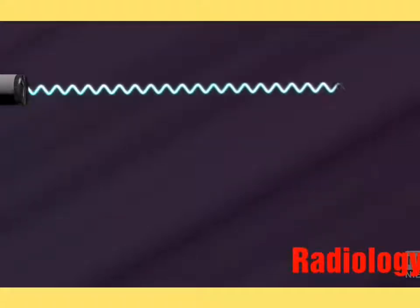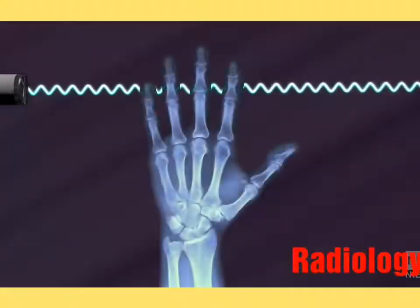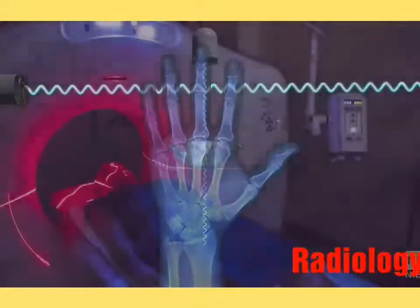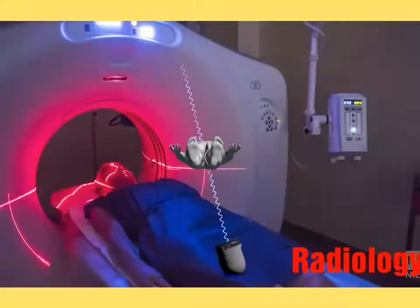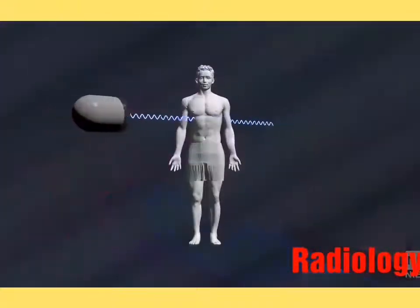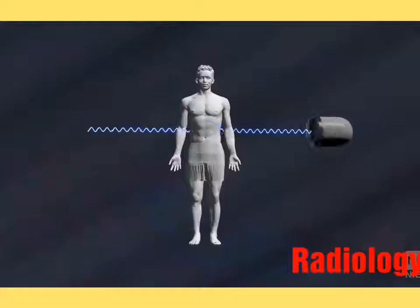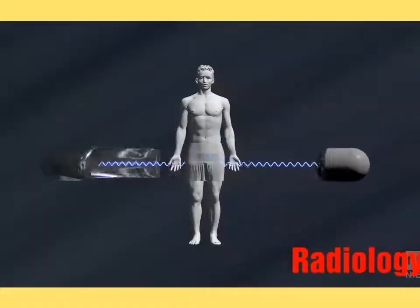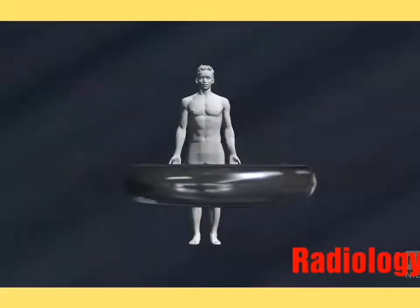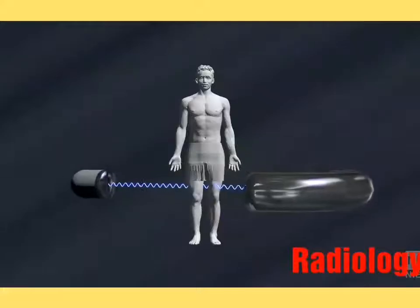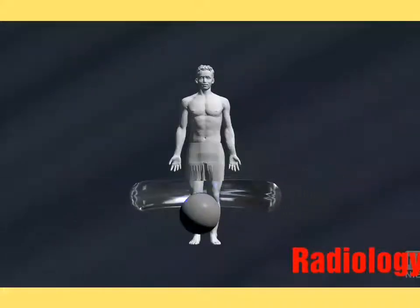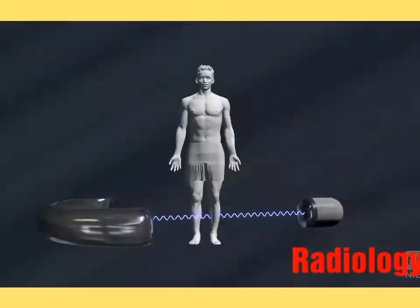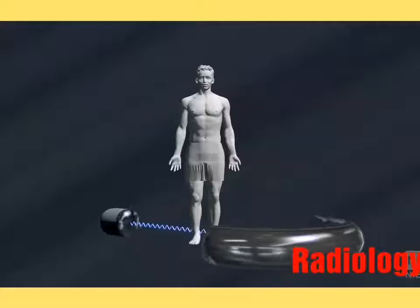A conventional X-ray uses a fixed tube that sends X-rays in only one direction, while a CT scanner uses a motorized X-ray source that shoots narrow beams of X-rays as it rotates around the patient. There are special digital X-ray detectors located directly opposite the X-ray source. As the X-rays pass through the patient, they are picked up by the detectors and transmitted to a computer.